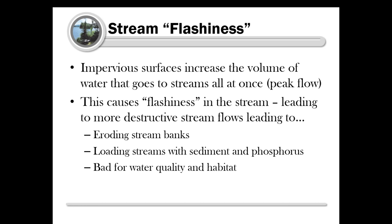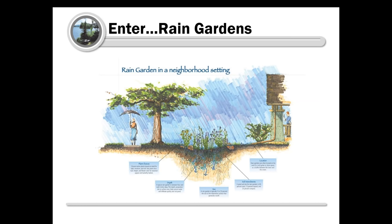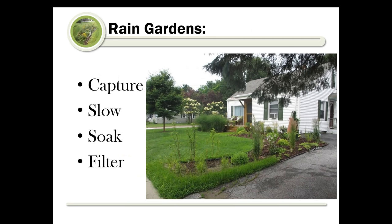All that water flowing into streams at once causes what's called stream flashiness. It leads to more destructive stream flow, eroding stream banks, loading streams with sediment and phosphorus - bad for water quality, habitat, and people. This is why rain gardens were developed and promoted by the EPA and the Vermont Department of Environmental Conservation. Across the country there's been a movement for about 15 years to make rain gardens and similar infrastructure part of normal stormwater practice. Rain gardens capture, slow, soak, and filter stormwater runoff.